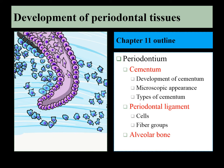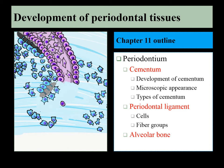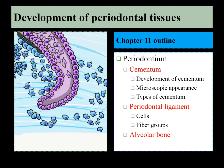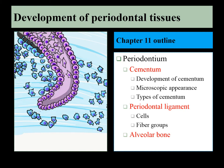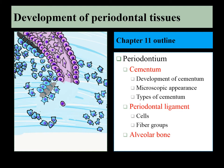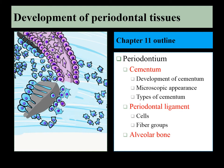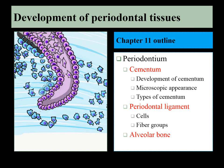In this chapter we're going to cover the periodontal tissues, which includes cementum, the periodontal ligament, and alveolar bone. In the previous chapter we covered the dentin-pulp complex, which both developed from the dental papilla, a large mass of neuromesenchymal stem cells. These three tissues share something in common in that they all develop from neuromesenchymal stem cells of the dental sac, and therefore there's a significant amount of overlap between these tissues because of their shared lineage.